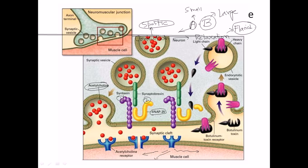SNAP25 is necessary for docking the neurotransmitter-filled vesicle with the axon membrane, but it is now blocked due to its cleavage by the A subunit. As a result, there is no neurotransmitter release, no binding of acetylcholine onto the muscle membrane receptor, and muscle contraction is halted — the muscle is always relaxed. This is flaccid paralysis, caused by botulinum toxin secreted by Clostridium botulinum, the most potent toxin on Earth.